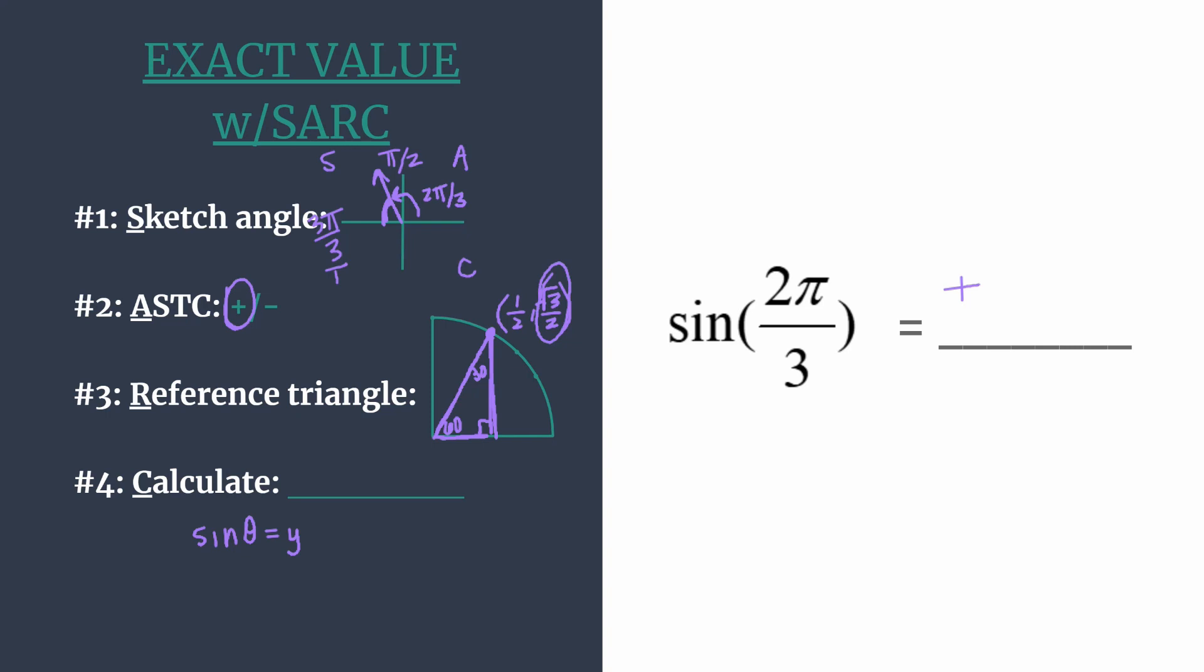And we know that our final answer will be positive square root three over two. And that's all you need to do to find the sine of 2π over 3.